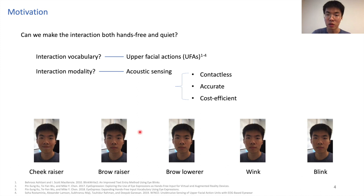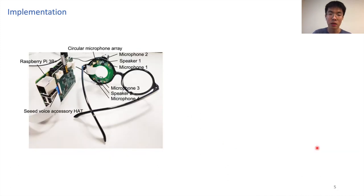cheek raise, brow raise, brow lower, wink, and blink. This is our prototype. We customized the SEED 4-mic linear array to a circular array to fit into an eyeglass frame. The 4-mic array together with a pair of earphones, which serves as speakers, are connected to the SEED voice accessory board, and the entire system is powered by a Raspberry Pi.